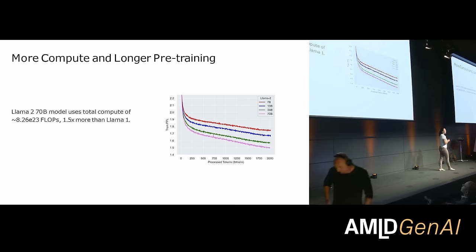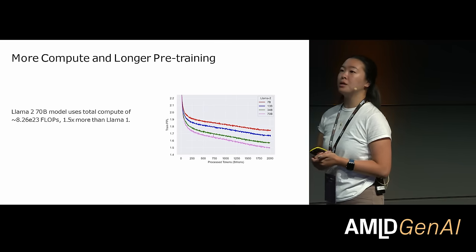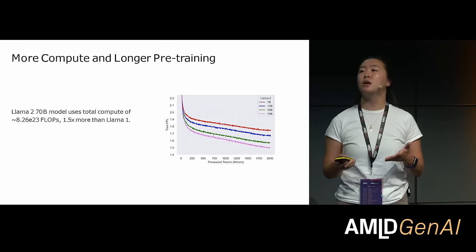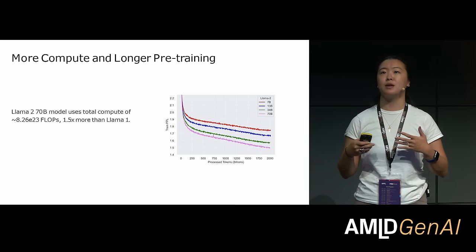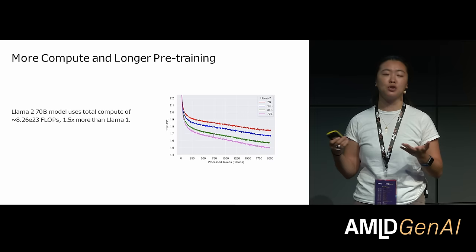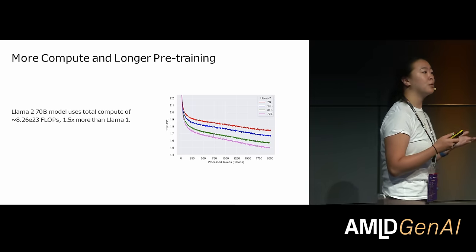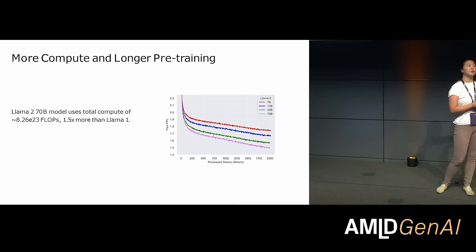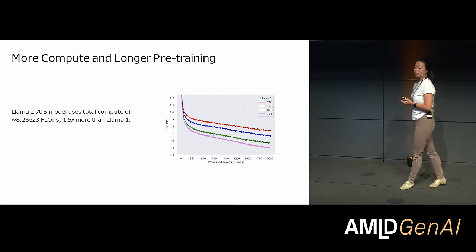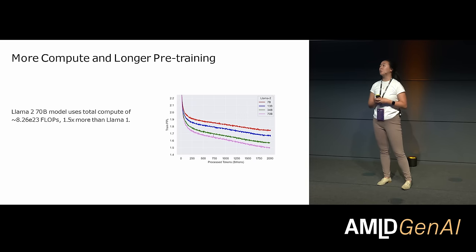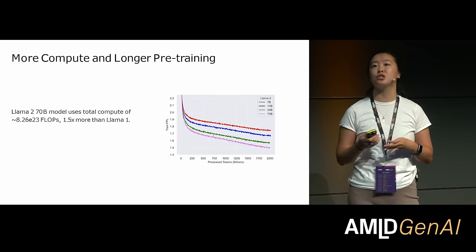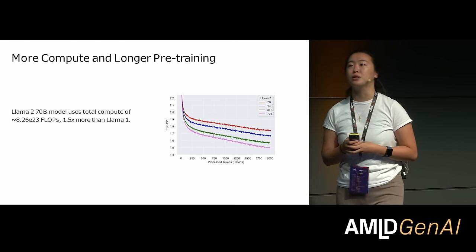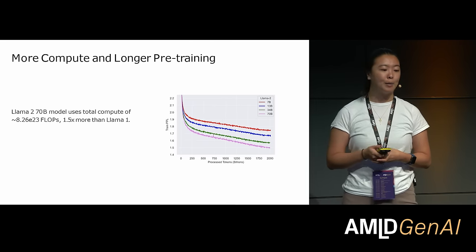Starting on pre-training: the biggest thing in Llama 2 is more compute and longer pre-training. Llama 2 used about 1.5x the amount of compute as original Llama 1. On the graph, the y-axis is training perplexity — lower is better — which is a proxy of the model's capability to internalize information in the training dataset. The x-axis is amount of training data. The red line represents the smallest model, the pink line our largest. As you scale model size and data, the model is better able to remember information. We don't substantially change most pre-training parameters, just some adjustment of the learning rate to accommodate the larger data size.